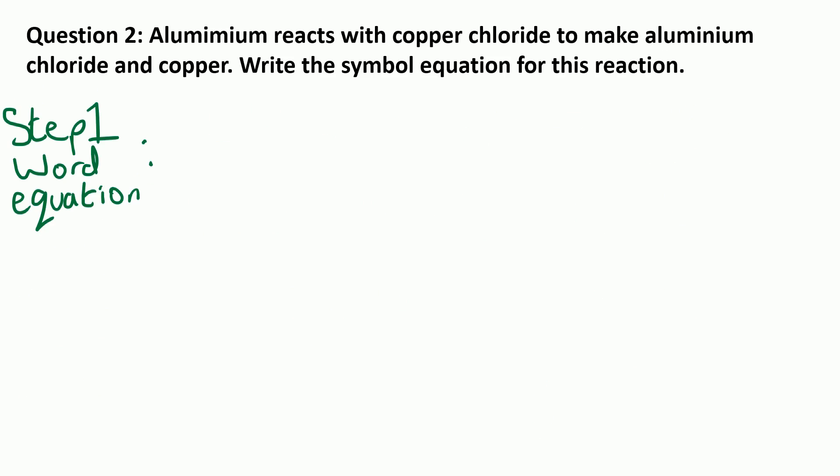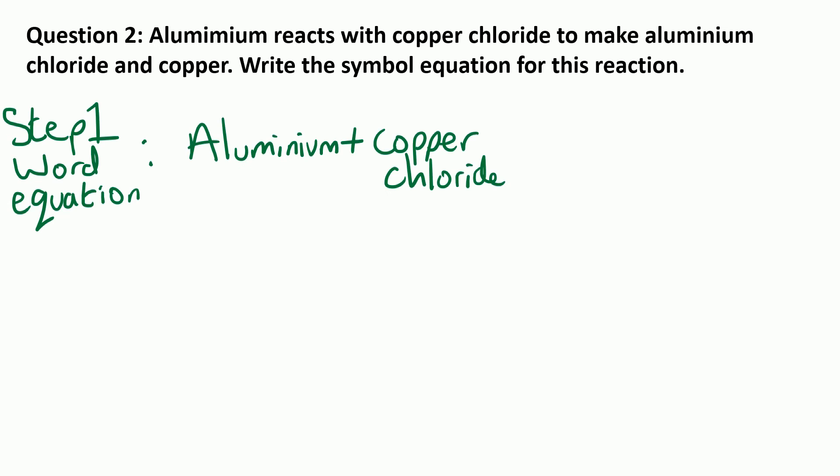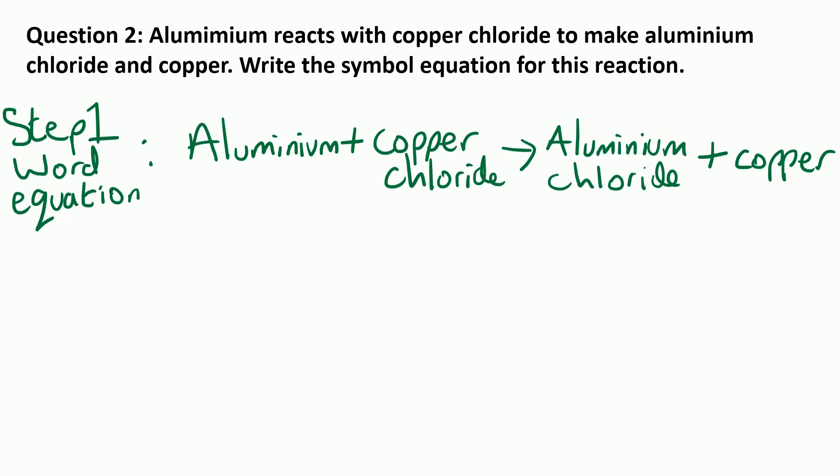Question two — once again, have a go at this question, see how you get on, and then resume the video when you've had a good go at it. Step one: the word equation is aluminium and copper chloride to make aluminium chloride and copper. We can see it's a displacement reaction again because aluminium is more reactive than copper — it's displacing it.